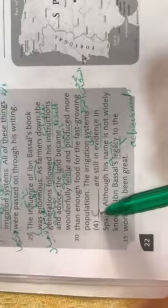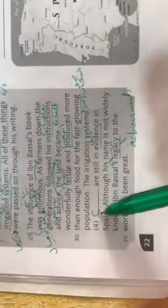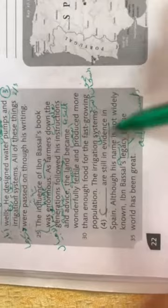The irrigation systems that he and his followers put in place are still in evidence today in Toledo, Spain.